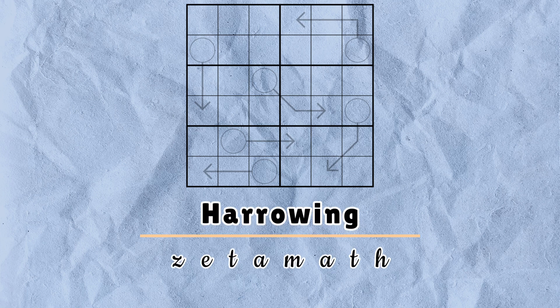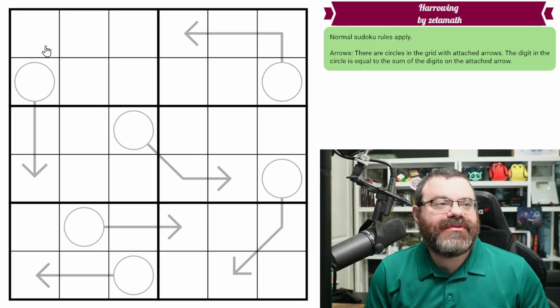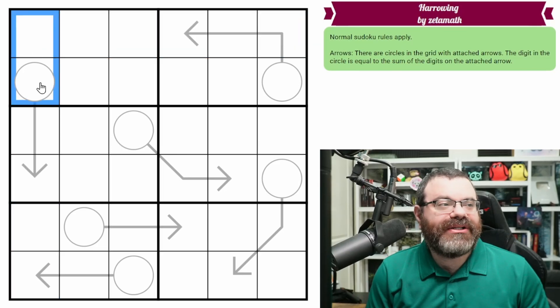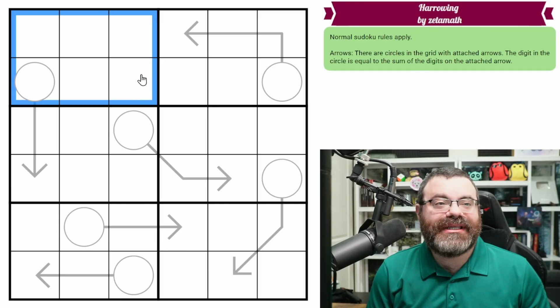Hello, let's continue our Sudoku adventure with Harrowing by ZetaMath. We have normal 6x6 Sudoku rules, which means in each row, each column, in each 2x3 box, we are placing the digits 1 to 6 exactly once each.